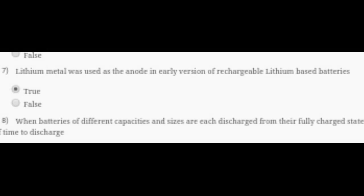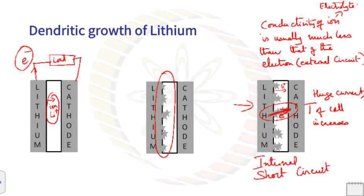Question 7: Lithium metal was used as the anode in early versions of rechargeable lithium-based batteries. This is True. You can see from the proof in this picture that on one side there is the cathode and on the other side is the anode, and in the place of anode, lithium is used. So our answer is True.